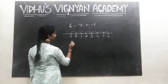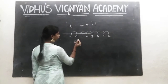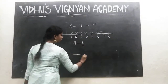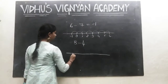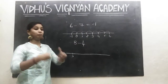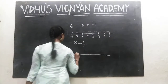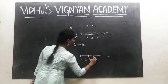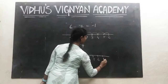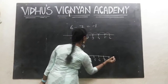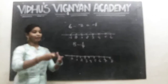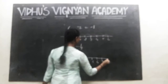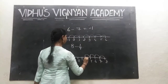Another example: I am taking 8 minus 4. I am at the origin. Now 8 indicates I am moving 8 steps towards the right: 1, 2, 3, 4, 5, 6, 7 and 8. Now minus 4 indicates that I am moving 4 steps towards your left: 1, 2, 3 and 4.